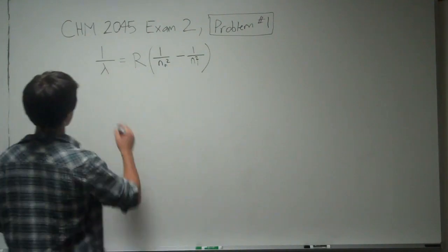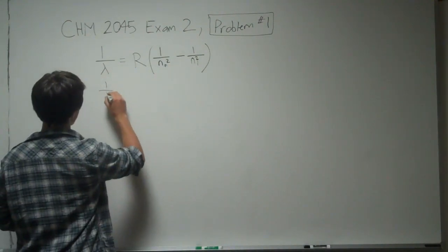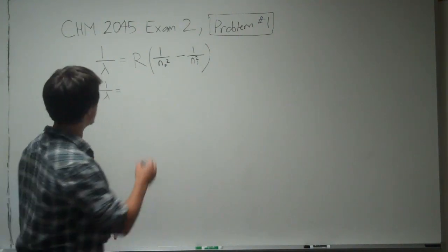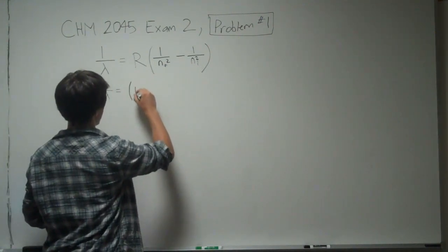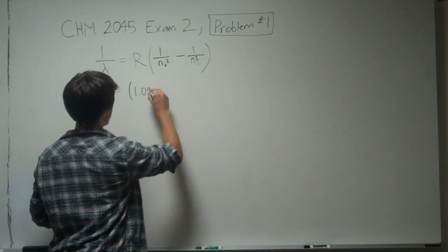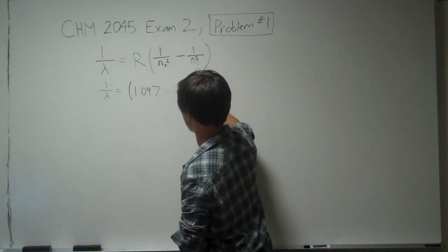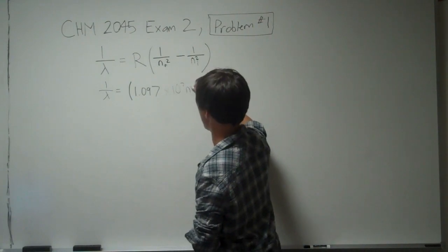So the next step will be 1 over lambda equals, this R is a constant, it's always going to be the same. So the Rydberg constant is actually 1.097 times 10 to the 7 inverse meters.